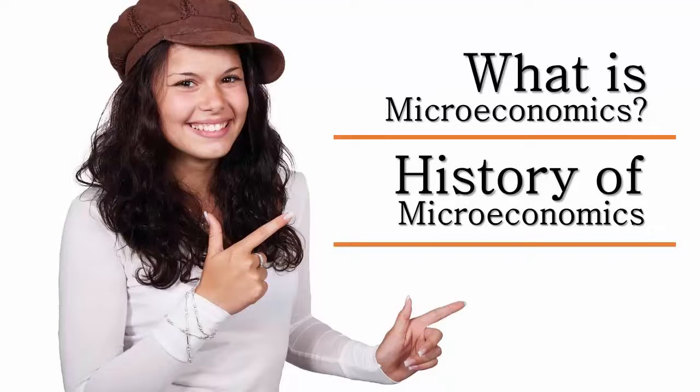Law and economics applies microeconomic principles to the selection and enforcement of competing legal regimes and their relative efficiencies. Economic history examines the evolution of the economy and economic institutions, using methods and techniques from the fields of economics, history, geography, sociology, psychology, and political science.